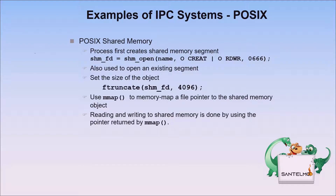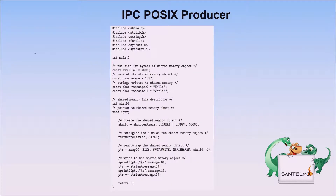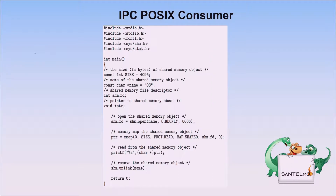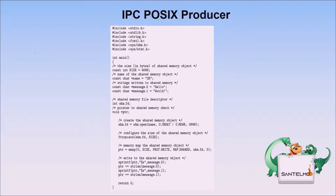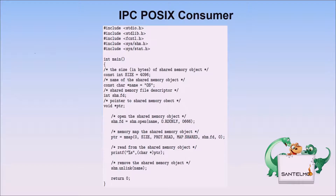For POSIX shared memory implementation: the process first creates a shared memory segment using shm_open() (also used to open an existing segment), sets the size of the object, then uses mmap() to memory-map a file pointer to the shared memory object. Reading and writing to shared memory is done using the pointer returned by mmap(). This is demonstrated for both the producer and consumer sides in POSIX systems.